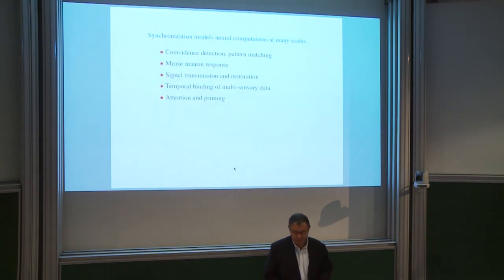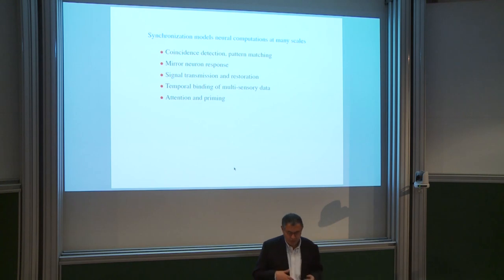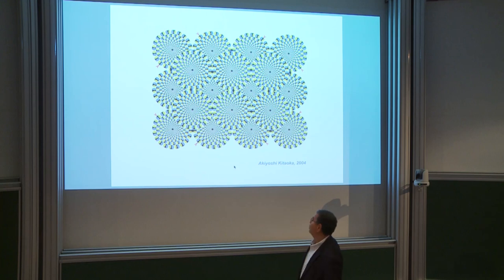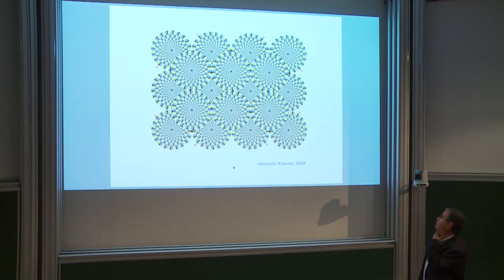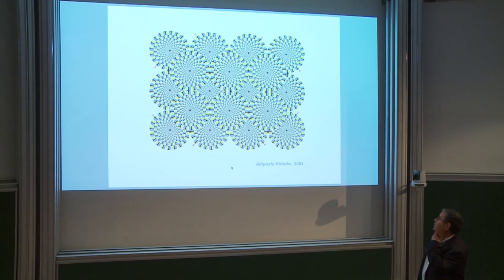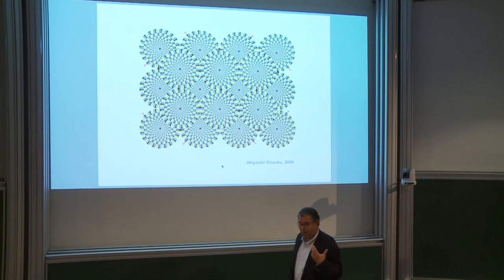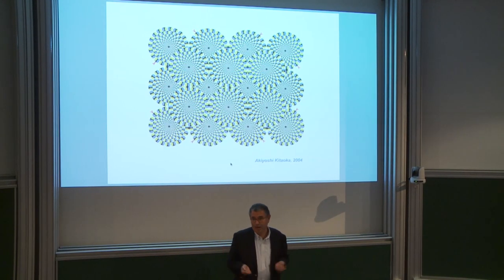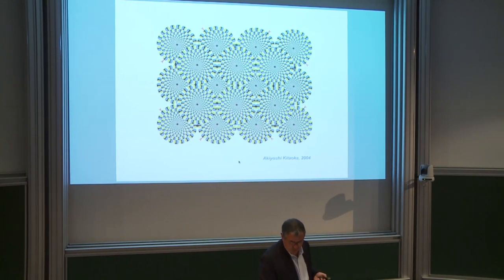Synchronization is also something used everywhere in the brain: coincidence detection, mirror neurons, binding. You're probably all familiar with these still pictures that can make a lot of people sick — that's a reflection that your visual system and the brain is a dynamic system, and you're seeing all these things moving where none are.